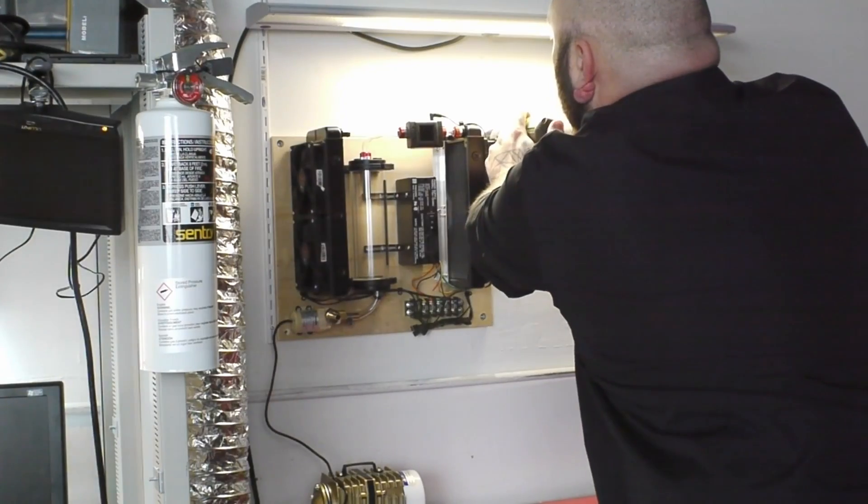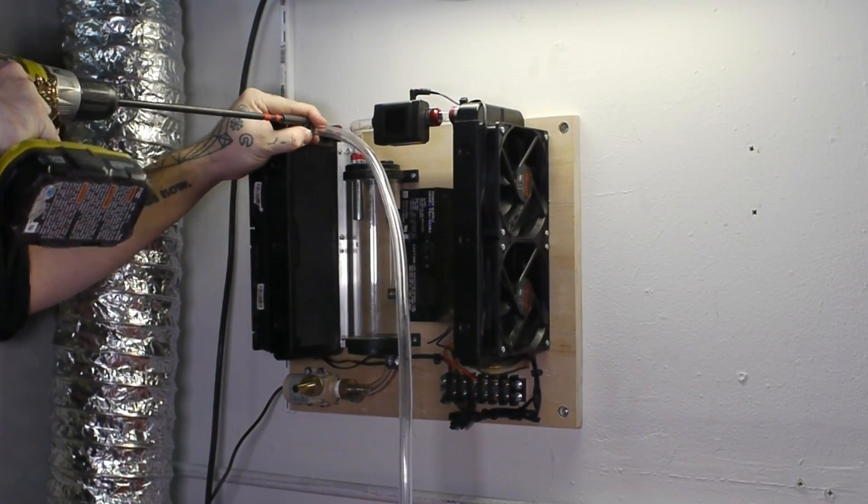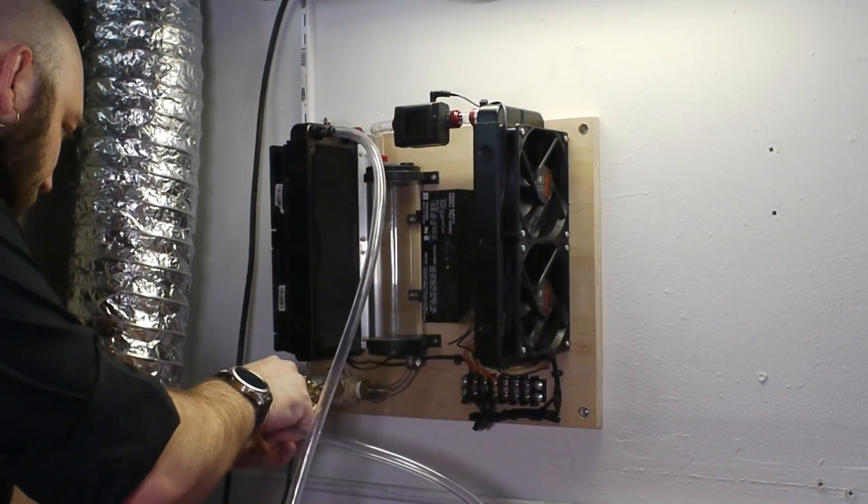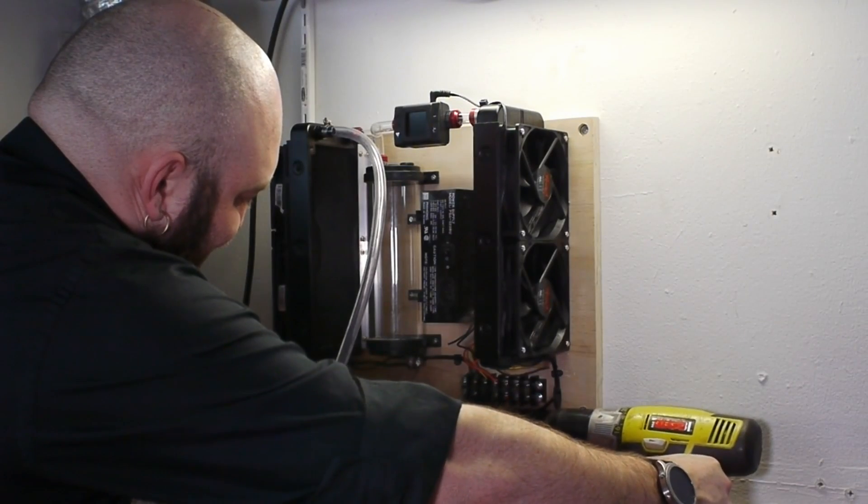I mounted the whole rig on the wall above the laser cutter using some drywall anchors, and then I could start hooking up the actual plumbing. I used soft tubing to connect it to the laser tube's water jacket, and secured them with some standard hose clamps.